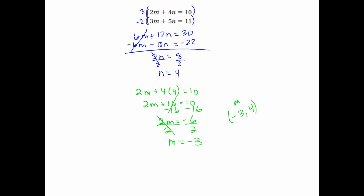That's m, and that would be n. Let's go back and check. Negative 3 times 2 is negative 6. 4 times 4 is 16. Negative 6 plus 16 is 10. That works. And 3 times negative 3 is negative 9; 5 times 4 is 20. Negative 9 plus 20 is 11. So that one works too.